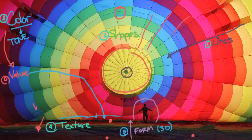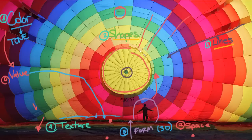And then there is space — number seven — which we've touched on a little with form. You can see that the photographer used form and space together to create the feeling of massiveness you would experience inside this balloon. So to do a quick review: the seven elements of design and composition are — one, lines; two, shapes; three, color or tone; four, texture; five, form; six, value; and seven, space. These are all tools you're going to be using when taking photographs.